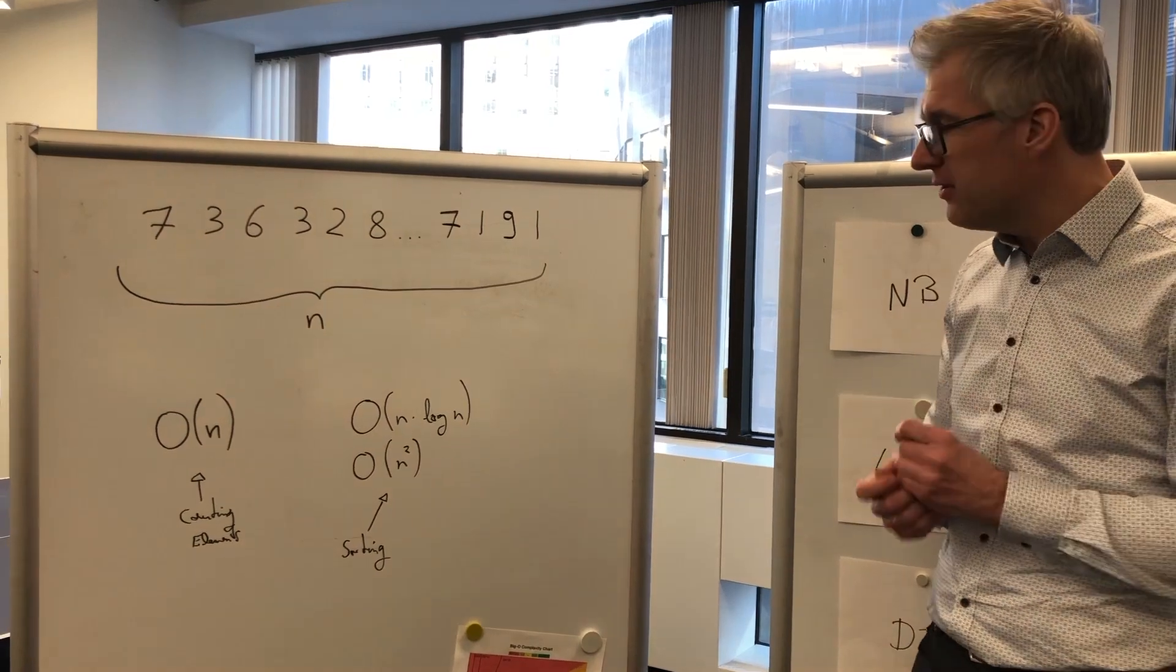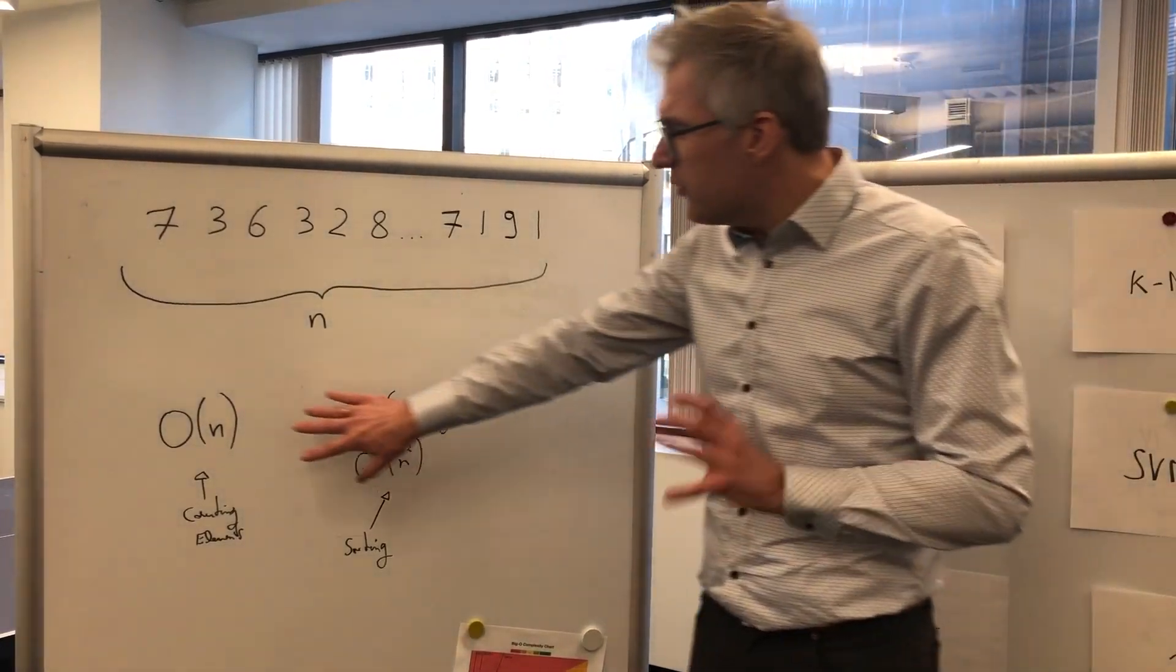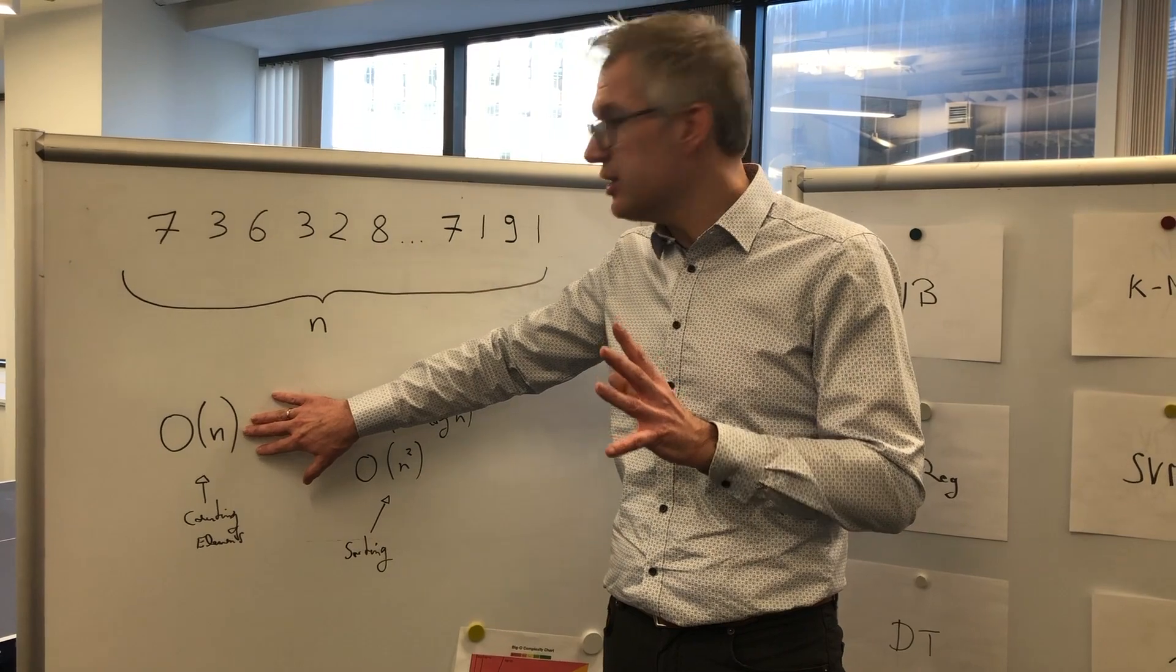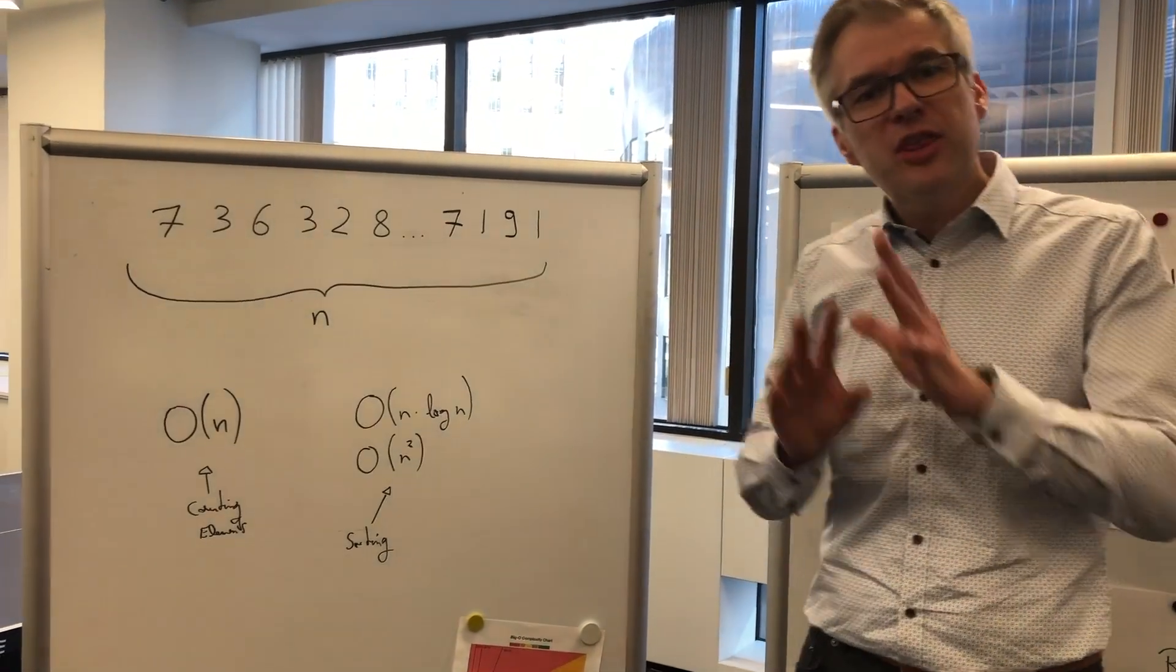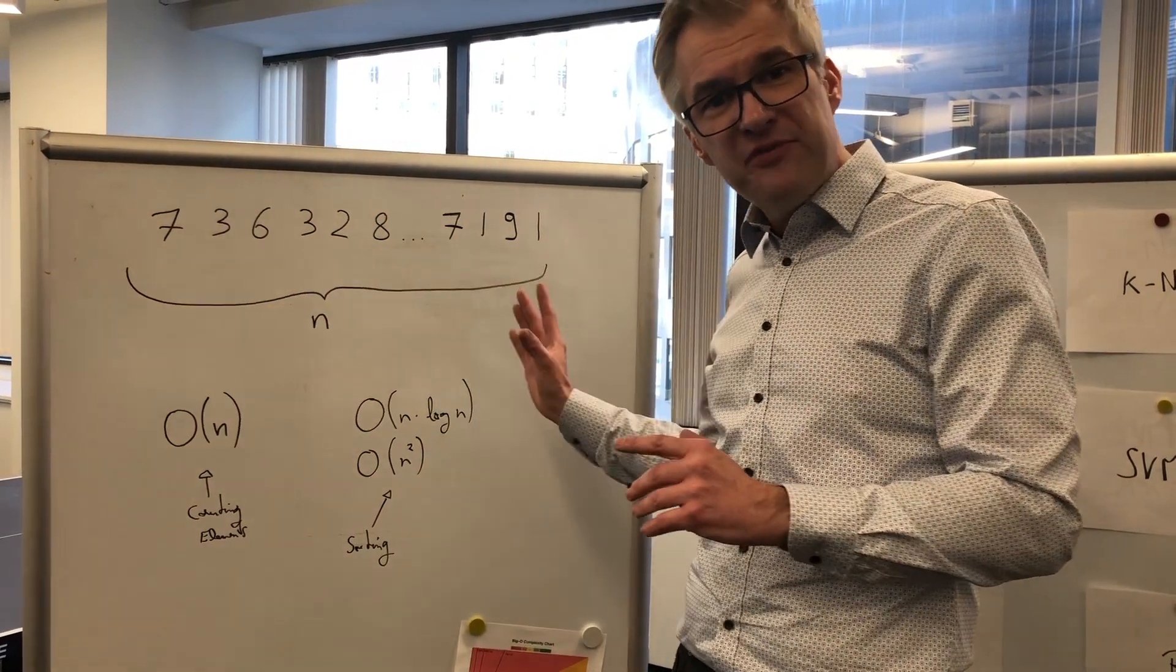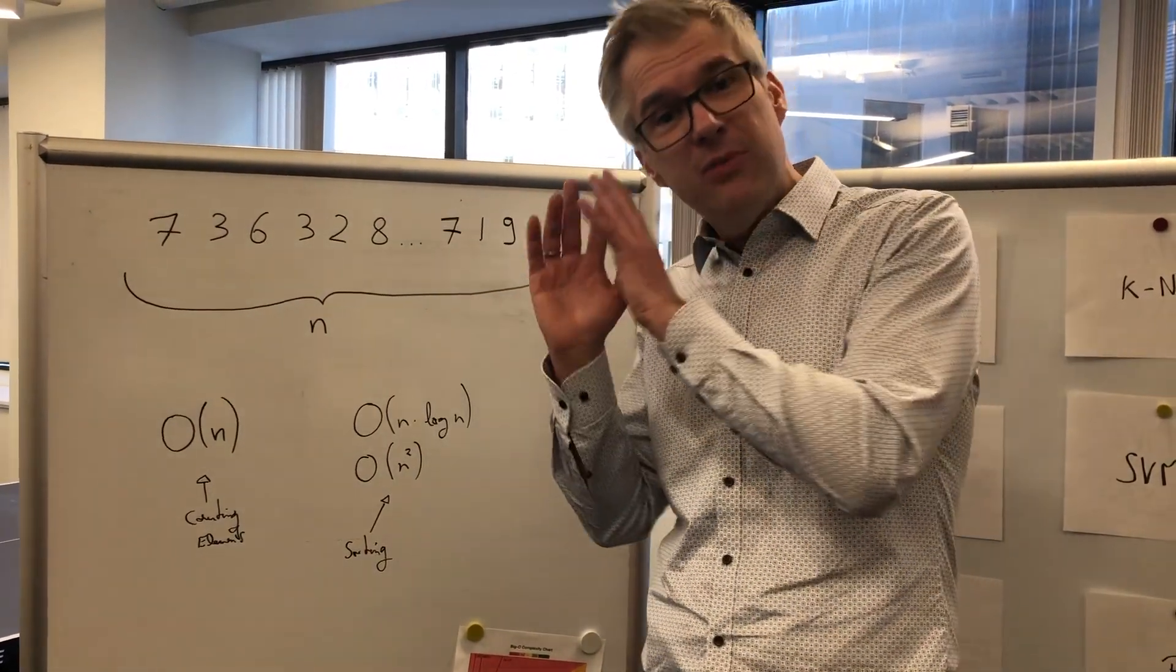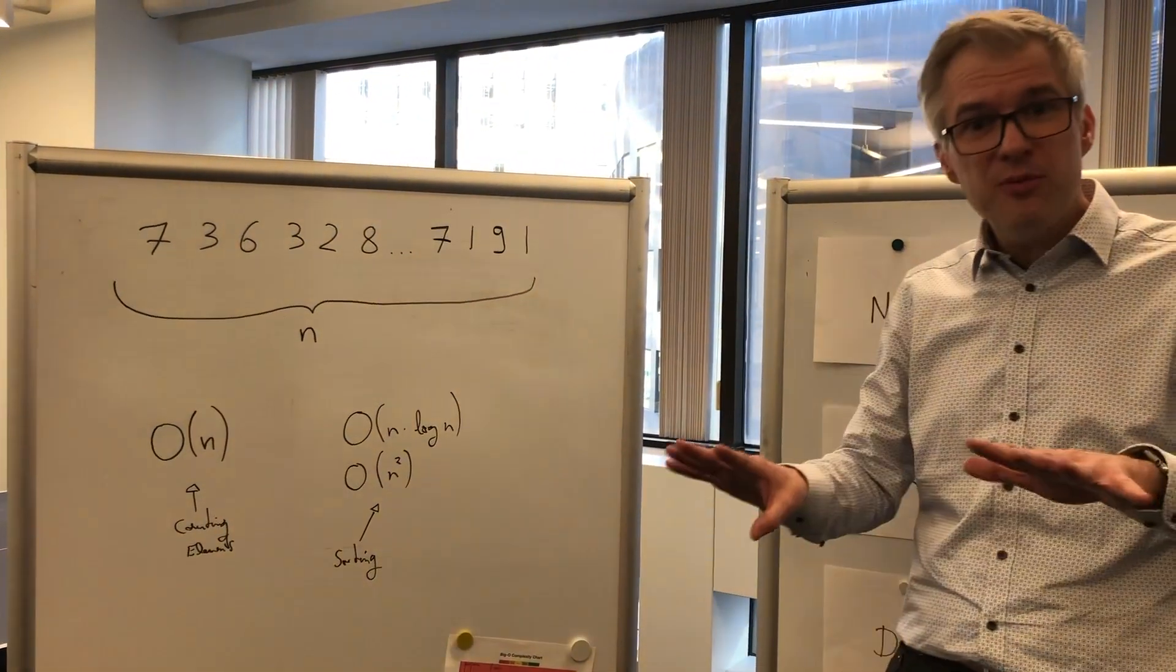But this is also a worst case notation. This means, for example, if I would know that the digit 3 only occurs up to 5 times - I don't know if it's less than 5 times, but it's definitely not more than 5 times.